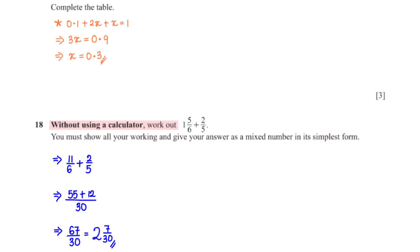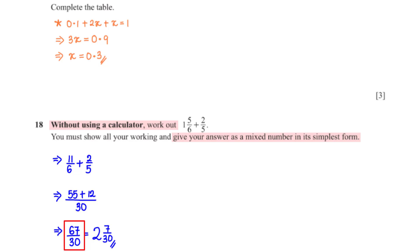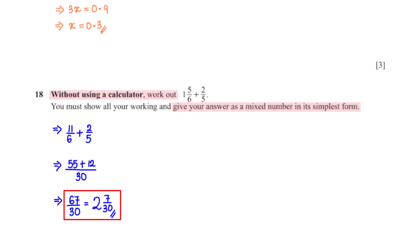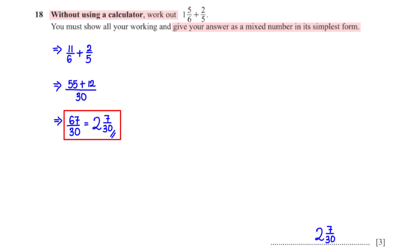Without using a calculator, work out 1 and 5 over 6 plus 2 over 5. You must show all your working and give your answer as a mixed number in its simplest form. First, we convert 1 and 5 over 6 into an improper fraction: 6 times 1 plus 5 is 11, giving us 11 over 6. The LCM of 6 and 5 is 30. For 11 over 6, we multiply numerator and denominator by 5 to get 55 over 30. For 2 over 5, we multiply by 6 to get 12 over 30. 55 plus 12 is 67. 67 over 30 is an improper fraction, so we convert: 30 goes into 67 two times with a remainder of 7, giving us 2 and 7 over 30.